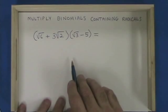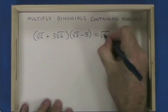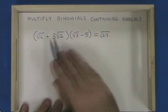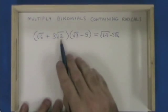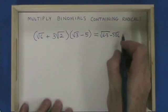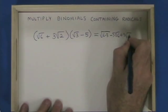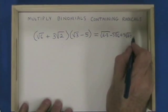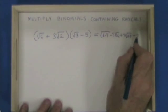In this example, I have root 6 times root 3, which gives me the square root of 6 times 3. Minus 5 times root 6 gives minus 5 root 6. Then 3 root 2 times root 3, which gives me plus 3 square root of 2 times 3. And 3 root 2 times negative 5, which is minus 15 root 2.